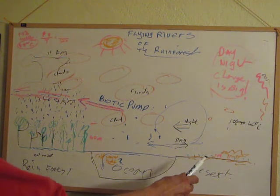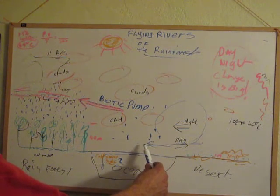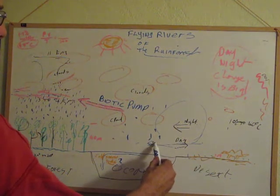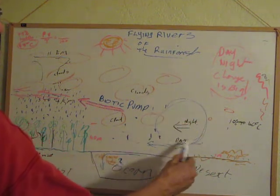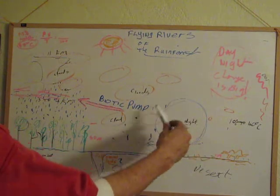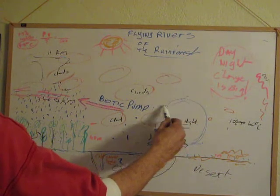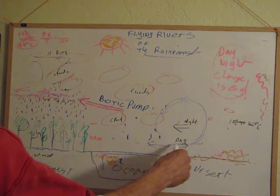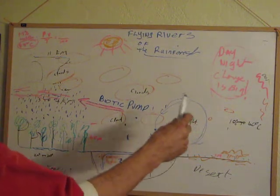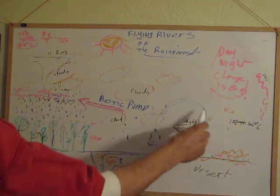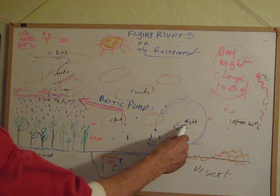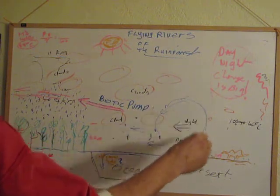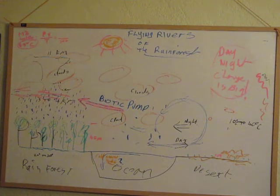By day you get a sea breeze going from the low pressure over the ocean to the lower pressure over the desert, and you get a kind of circulating effect — it goes in, rises up and circulates, like a water wheel in the air except there's not much water in it. Then by night, the desert cools down really quickly, so now it's high pressure at night and the high pressure is going towards the ocean, giving you another kind of swirling wheel.